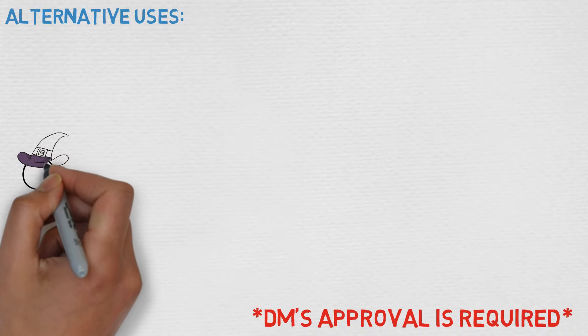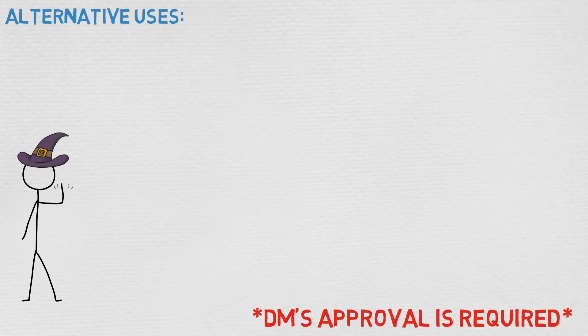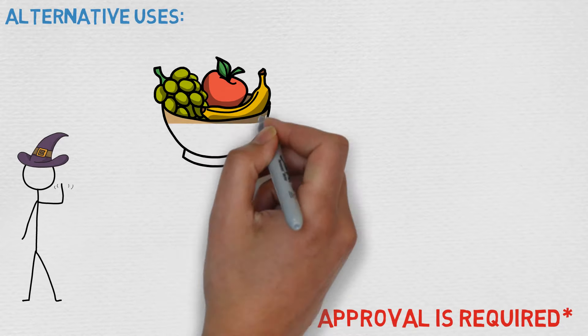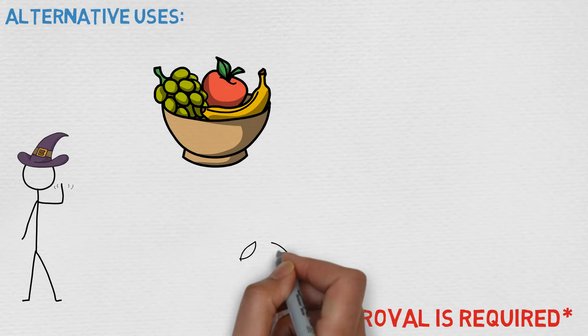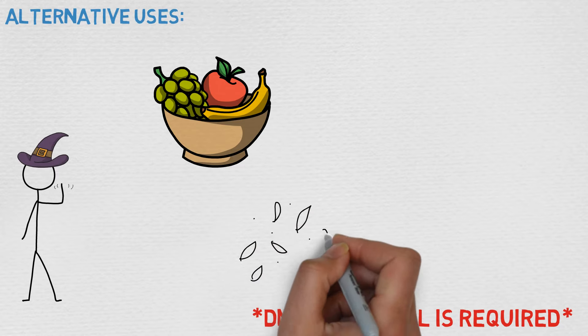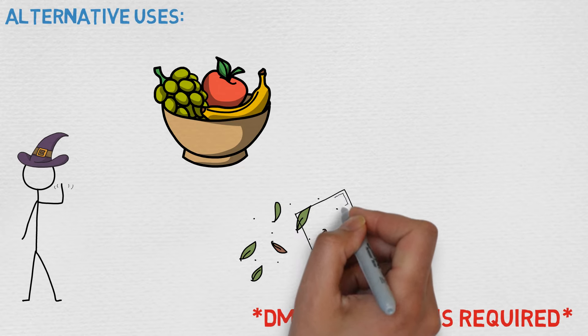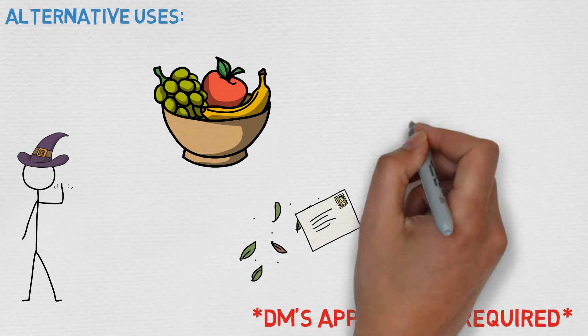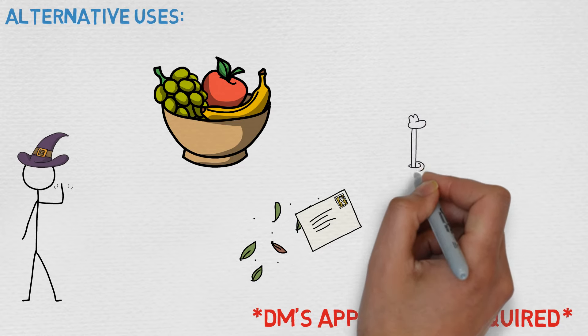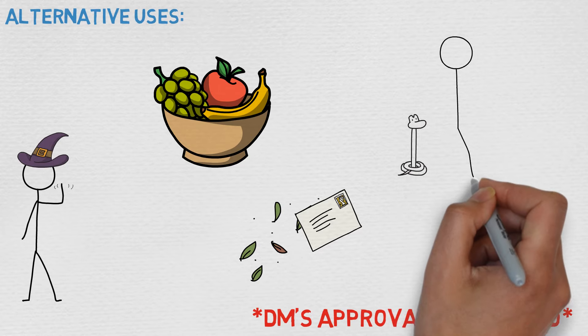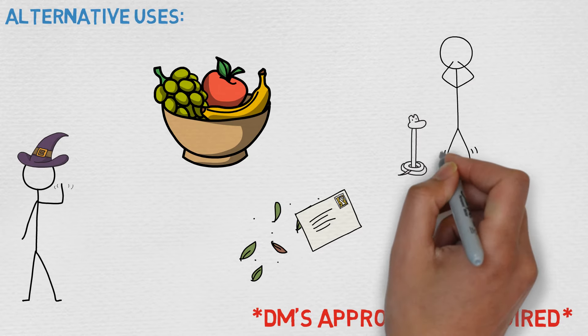And another interesting use: using that gust of wind, that harmless sensory effect, to float documents out the window—vital documents. And you can also use the sound or even the smell to some degree to give the impression that a creature's around, such as a snake, when it's really not. This could be used to strike fear into enemies or even just serve as a diversion. Certainly your creativity is the limit when it comes to this spell.